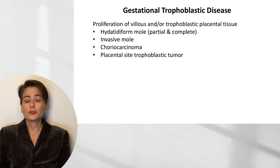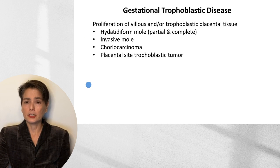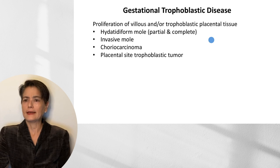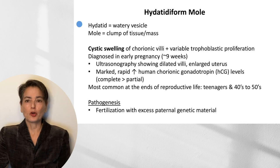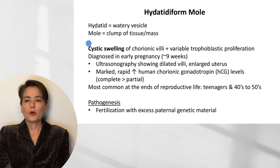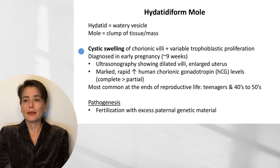Back to gestational trophoblastic disease. This is defined as a proliferation of villous and/or trophoblastic placental tissue. There are four entities we'll consider: hydatidiform mole (which can be partial or complete), invasive mole, choriocarcinoma, and placental site trophoblastic tumor. Beginning with hydatidiform mole — the word hydatid comes from the Greek meaning 'watery vesicle,' referring to grape-like swellings of the chorionic villi, often called hydropic, which is associated with edema. The word mole refers to a clump of tissue or mass. In hydatidiform moles, we see cystic swelling of the chorionic villi with variable trophoblastic proliferation.